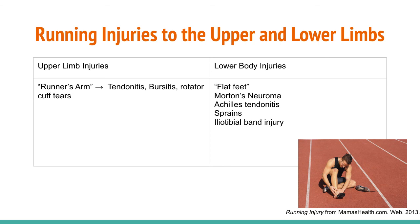Far more lower body injuries are seen in running than upper limb injuries. The lower limbs are the weight-bearing limbs that absorb the shock of every stride. Upper limb injuries while running are more common with previous excessive use of the upper body. For example, if a runner has a weak pectoral girdle or has suffered a previous injury at the shoulder, the runner is more likely to experience injury at that joint as a result of excessive running.